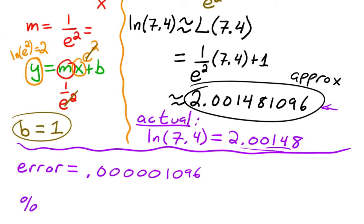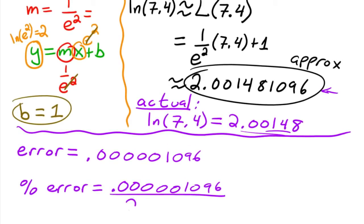The percent error is equal to that error, 0.000001096, over the actual, which is 2.00148, times 100%.